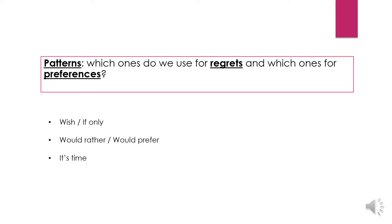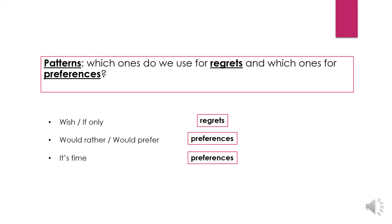Let's try. For instance, 'wish' and 'if only' — what do you think? Is this a regret or a preference? Yeah, it's a regret. What about 'would rather' and 'would prefer'? In this case we are expressing preferences. What about 'it's time'? In a way it's a preference — we indicate that it's the precise moment to do something.